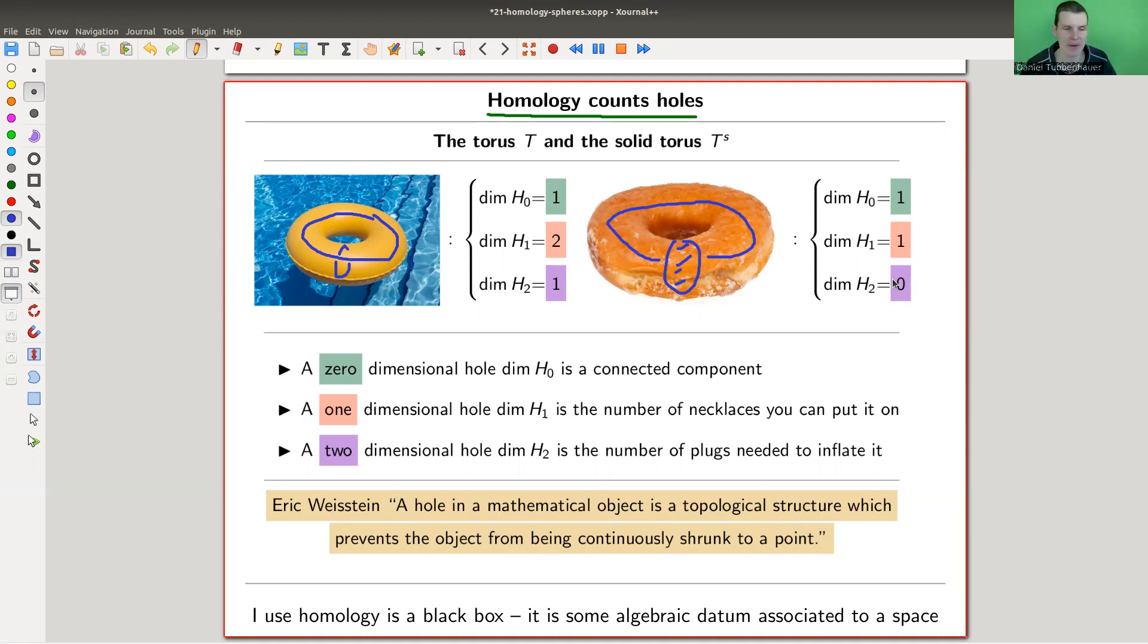I will use homology here as a black box. The only thing you need to know is it's an algebraic datum associated to a space. And it's really, really powerful. Topologists like it a lot. It's extremely good. It distinguishes so many spaces, and it's really, really fantastic.